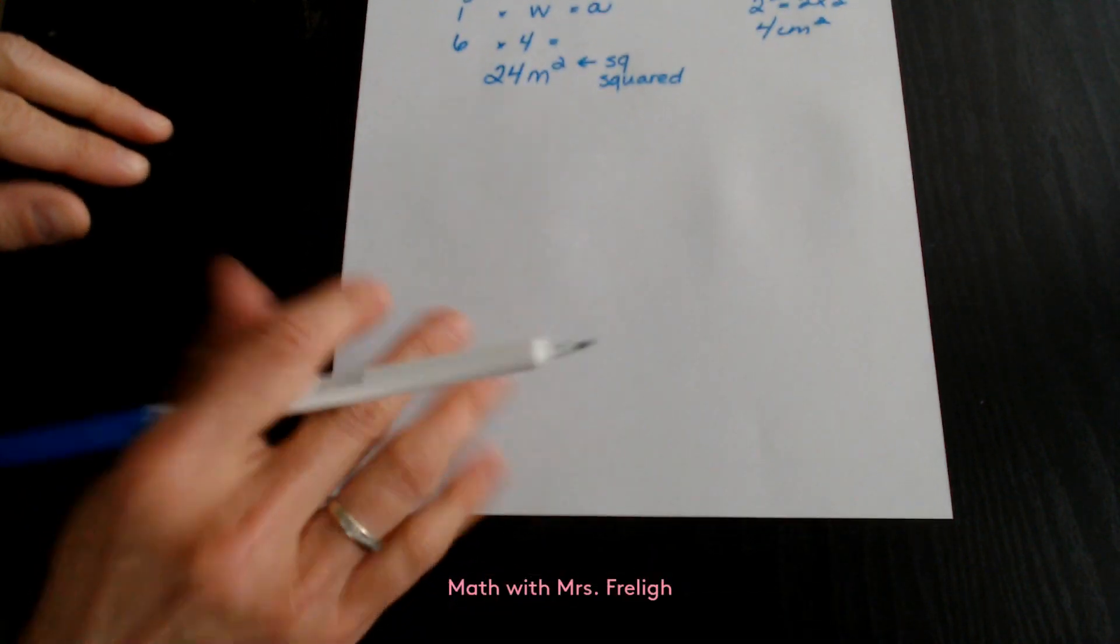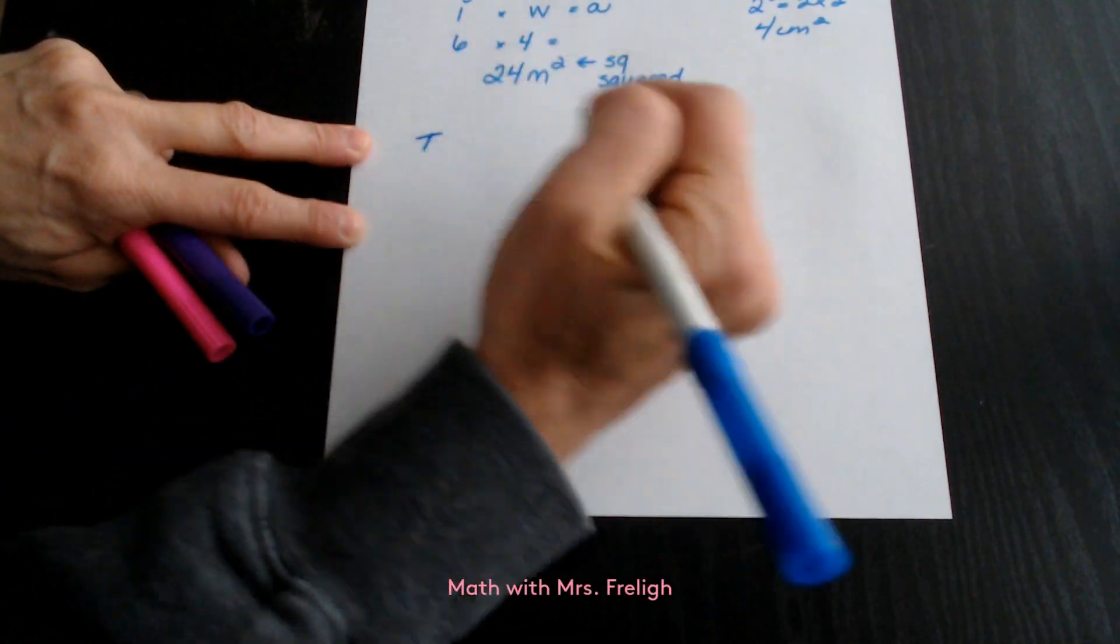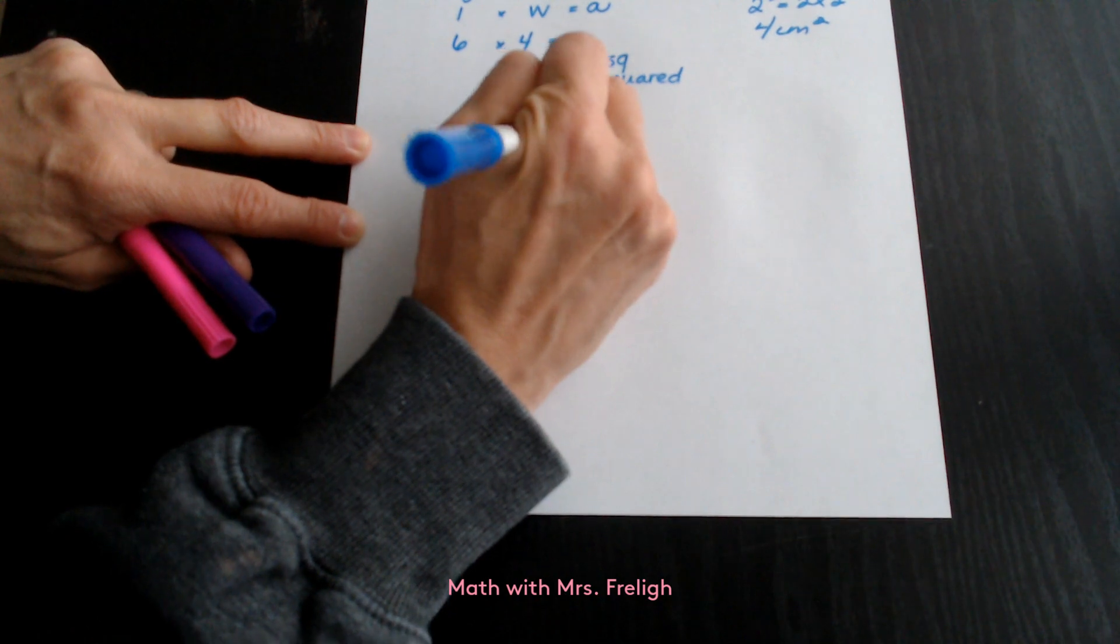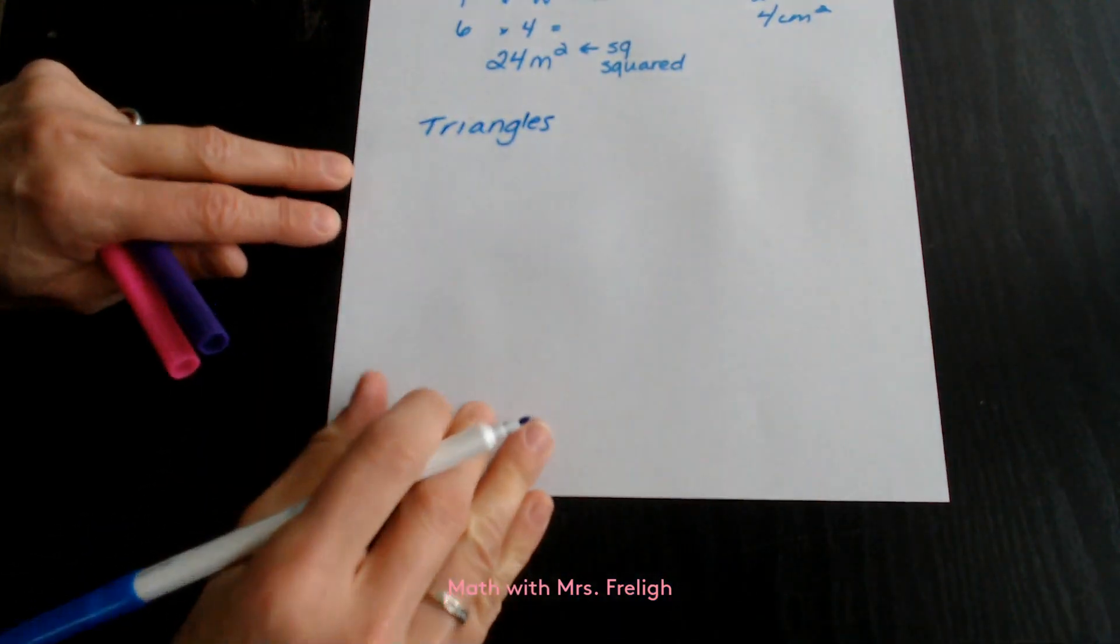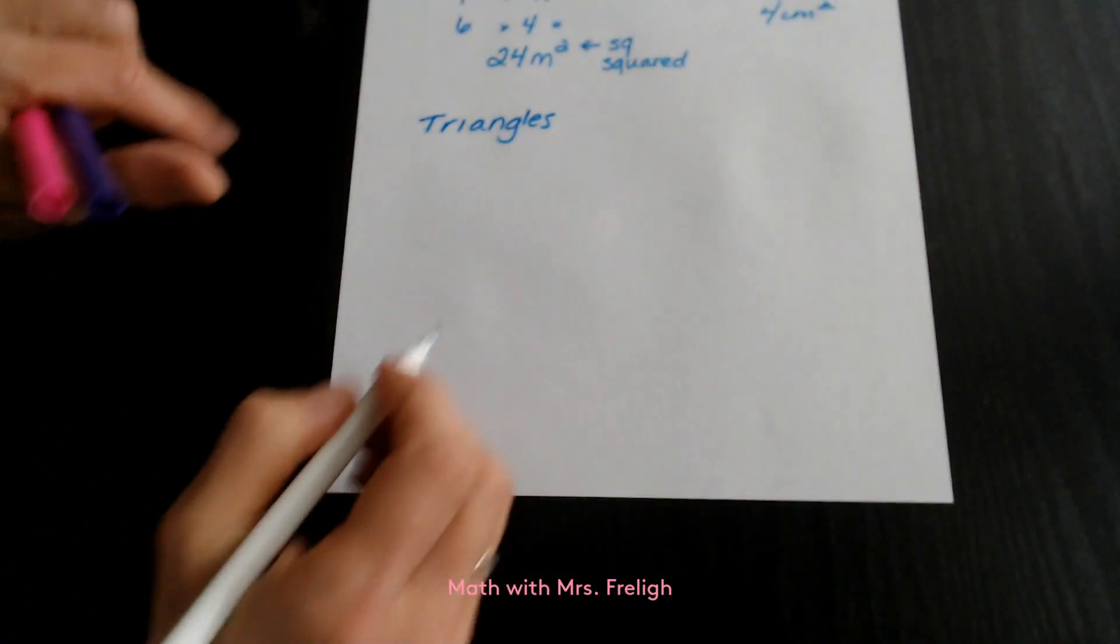Now we're going to talk about triangles. Triangles are very similar to squares and rectangles, but also very different. When we're talking about triangles,